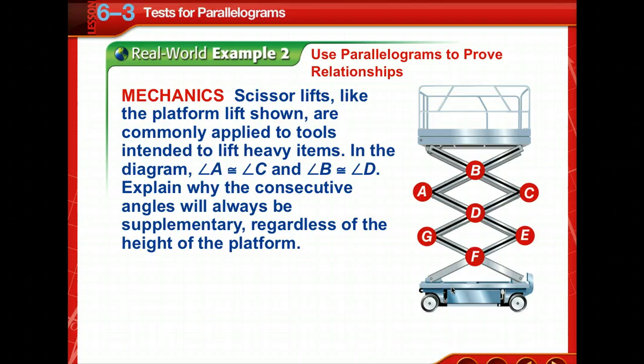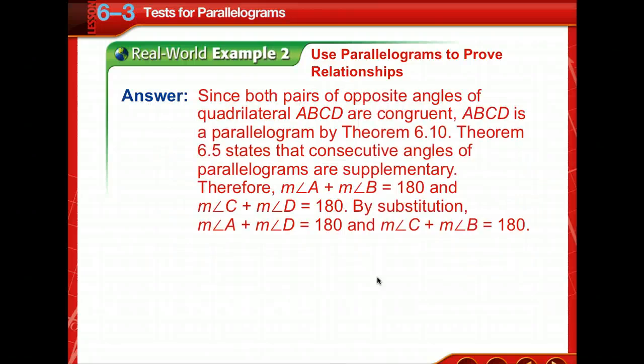You can use conditions of parallelograms to prove relationships in real-world situations. So here's a pair of scissor lifts, and in the diagram, A is congruent to C and B is congruent to D. And we're asked to explain why the consecutive angles will always be supplementary, regardless of the height of the platform.